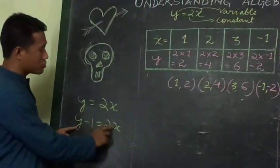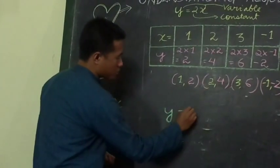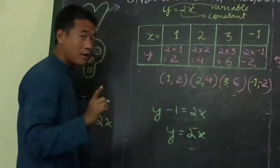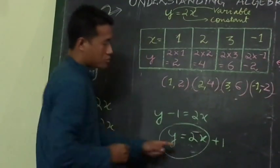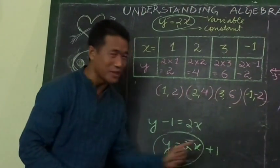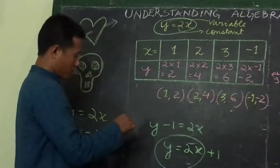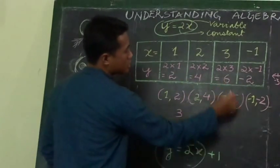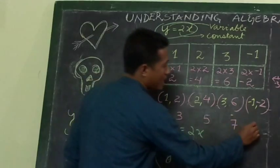y minus 1 equals 2x — this is what we know. This is the meaning of y minus 1 equals 2x. If we rearrange: y equals 2x plus 1. So for x is 2, y equals 5; for x is 3, y equals 7; for x is minus 1, y equals minus 1.